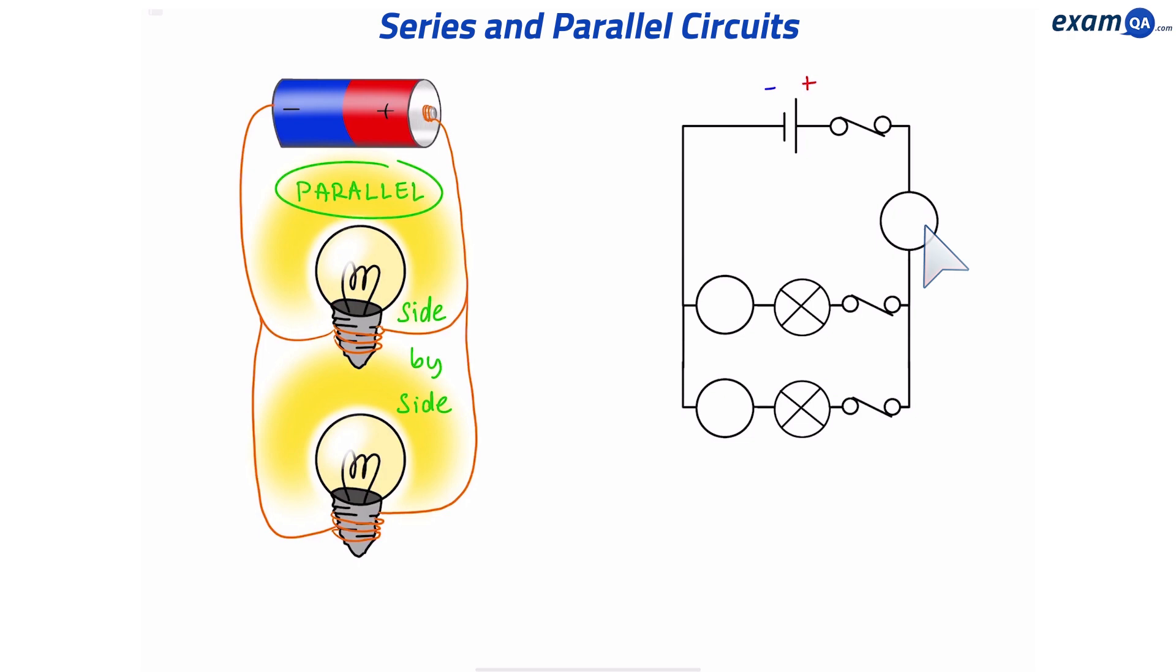Let's do another example. Let's say the total current is 7 amps and we know that one of the branches has a 4 amp current. What will the other branch be? So, we know that these two have to add up to give us 7. 7 take away 4 equals 3. So, it will be 3 amps.